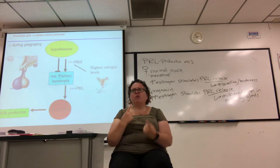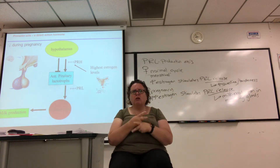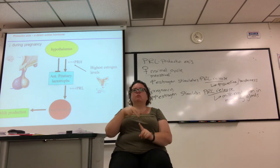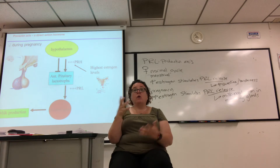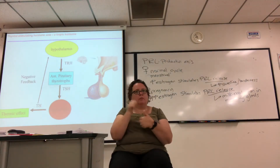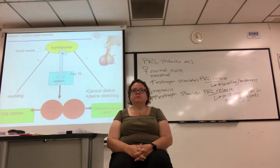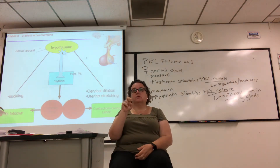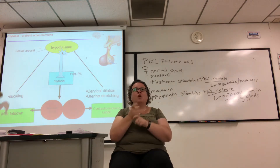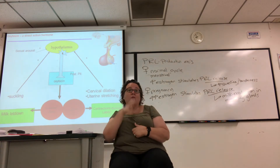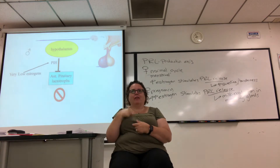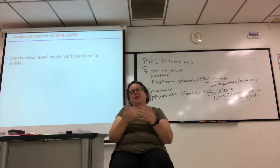Quick review: milk production is prolactin; milk letdown is oxytocin — two different things. To go back: oxytocin causes milk letdown from the posterior pituitary. Those are the two functions to keep straight.